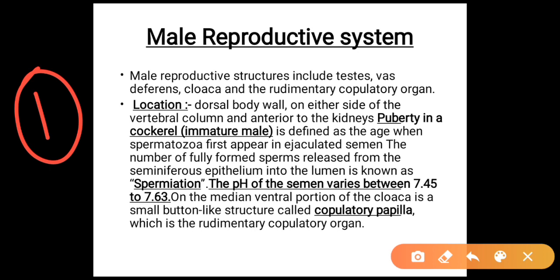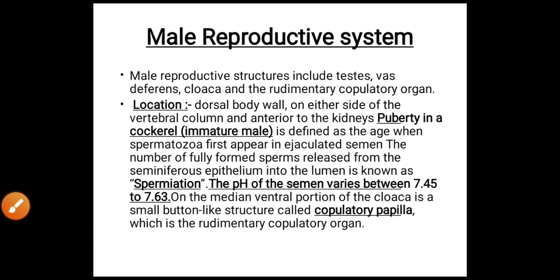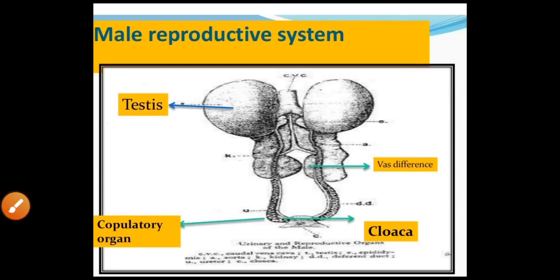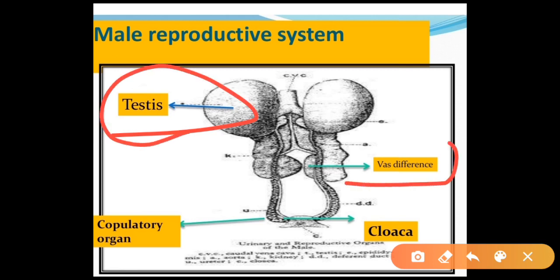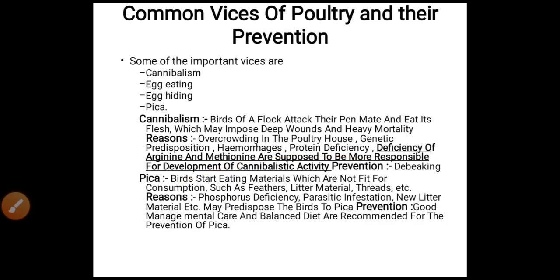Male reproductive system: the structure includes testes, vas deferens, cloaca, and rudimentary copulatory organs. The male reproductive organs are located on the dorsal body wall on either side of the vertebral column, anterior to the kidney. Puberty in the cockerel is defined as the age when spermatozoa first appear in the ejaculate. The number of fully formed sperm released from the seminiferous epithelium into the lumen is known as spermiation. The pH of semen is about 7.45 to 7.63. On the median ventral portion of the cloaca is a small button-like structure known as copulatory papillae, which is the rudimentary copulatory organ.